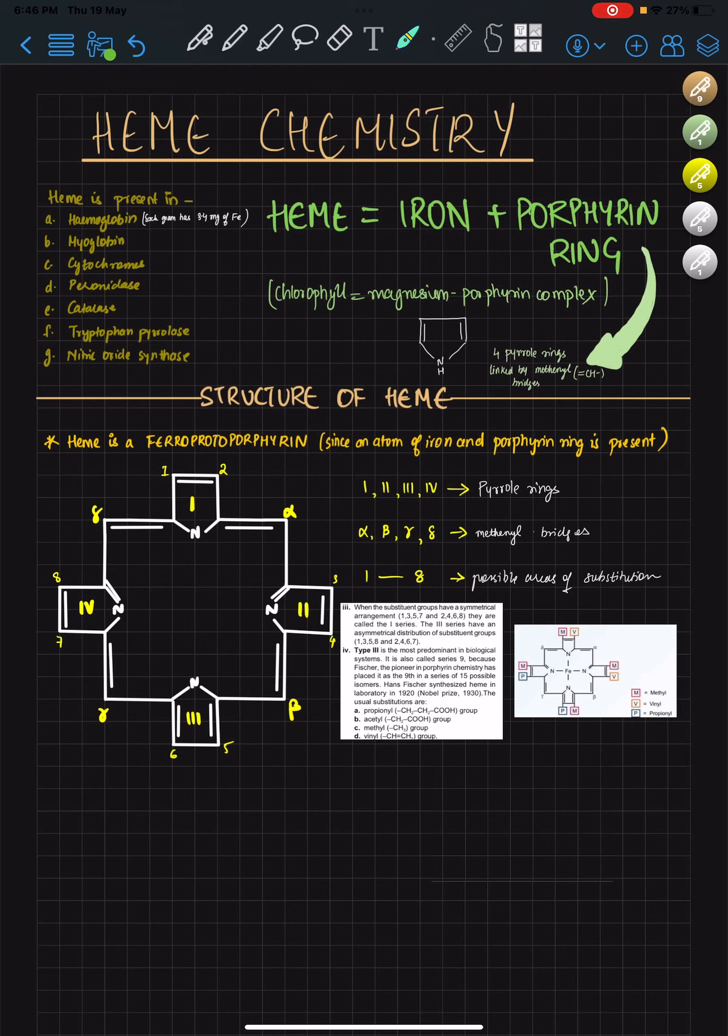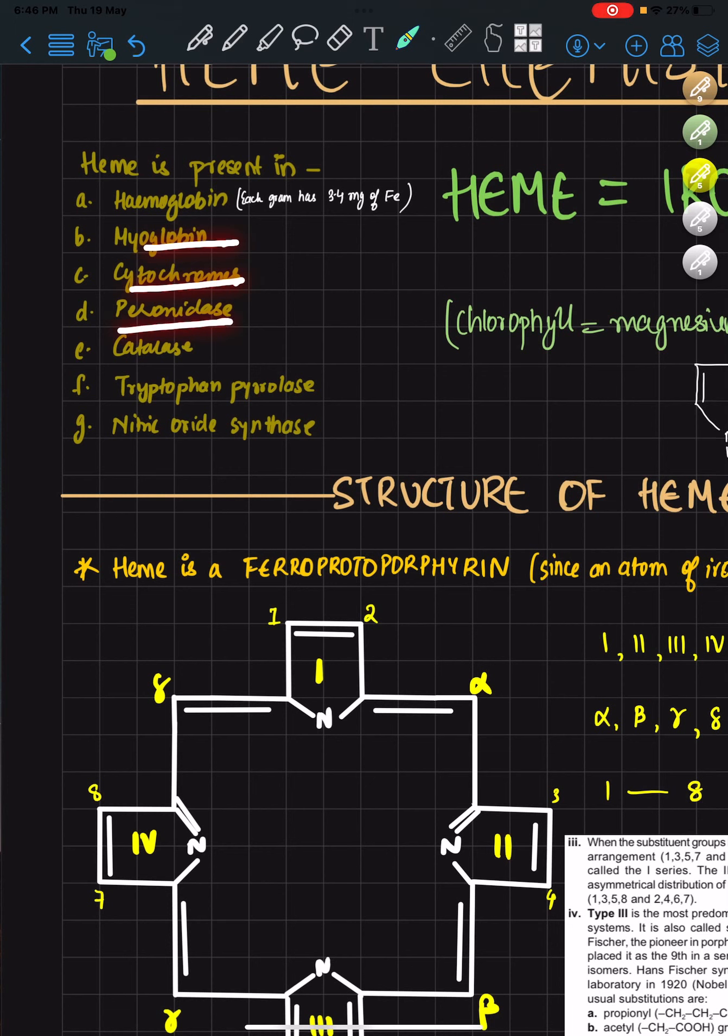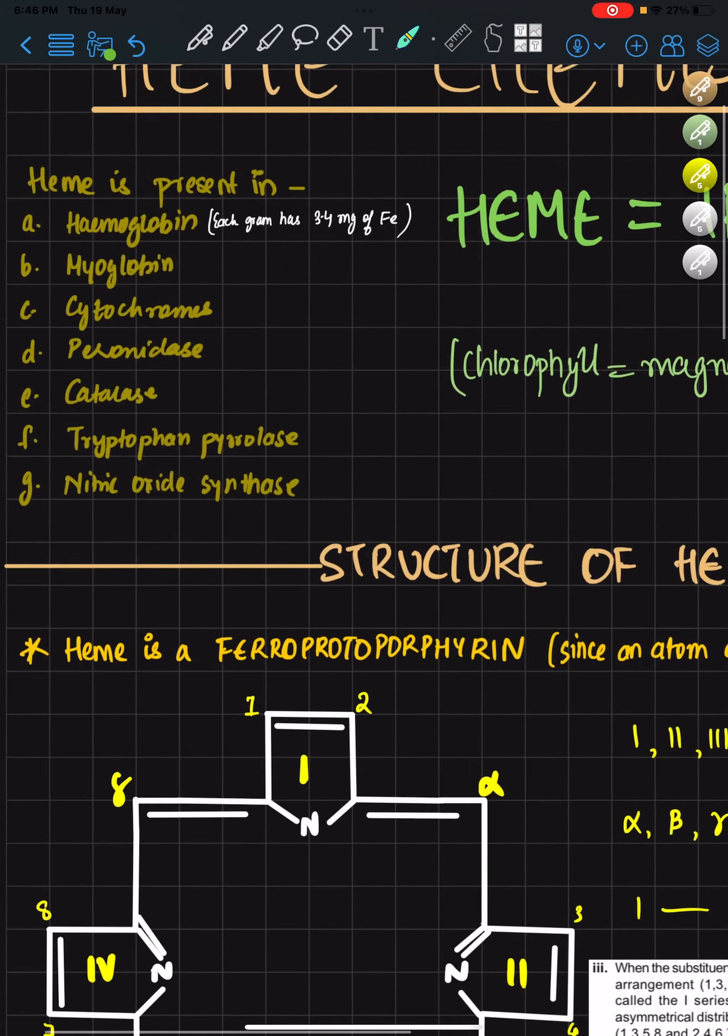When we talk about hemoglobin, we talk about heme because heme is a prosthetic group in hemoglobin. But heme is also present in other molecules like myoglobin, cytochromes, peroxidase, catalase, tryptophan pyrrolase, and nitric oxide synthetase. Another point is that each gram of hemoglobin has 3.4 milligrams of iron in it.